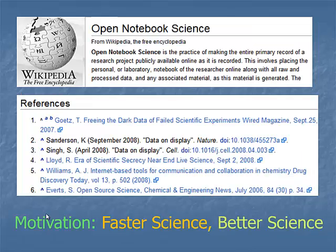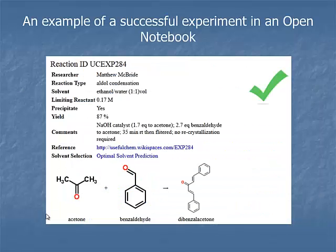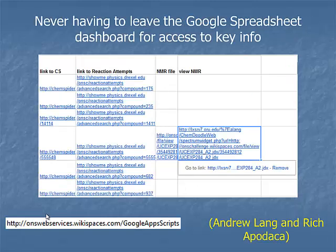This is what I'm calling Open Notebook Science, and if you go on Wikipedia there are more examples and articles written about it. A successful experiment in our query engine shows up with a green checkmark. You have the yield and minimum information in the summary, and if you click on the link, it takes you to the full experiment with all associated raw data explaining how it actually happened.